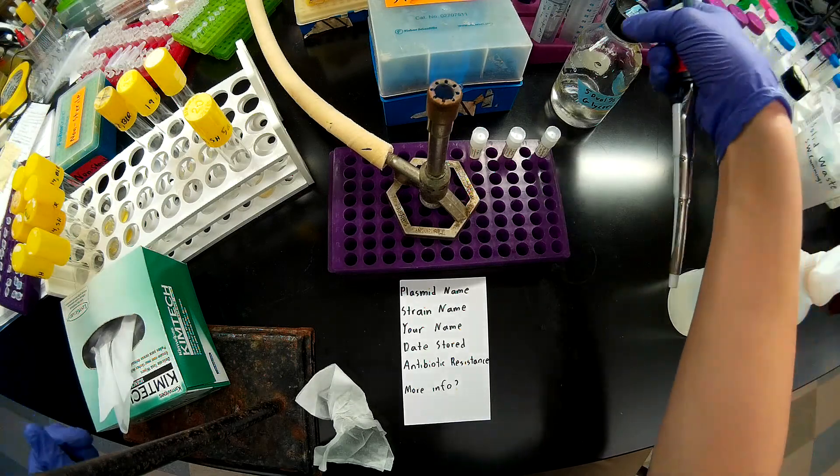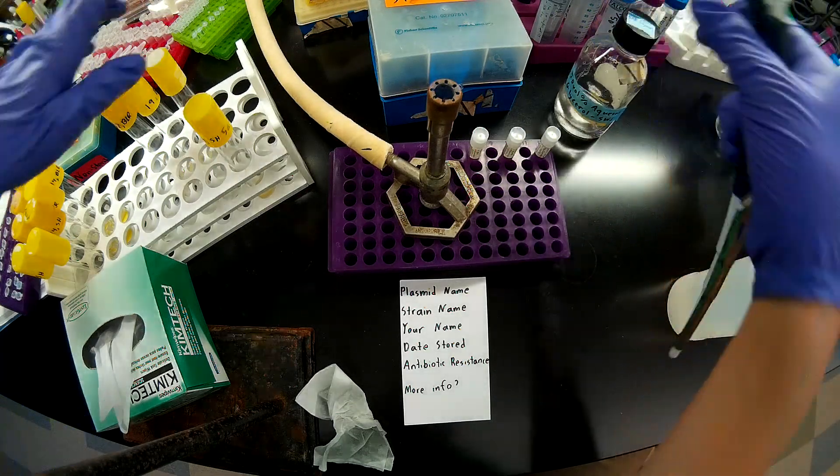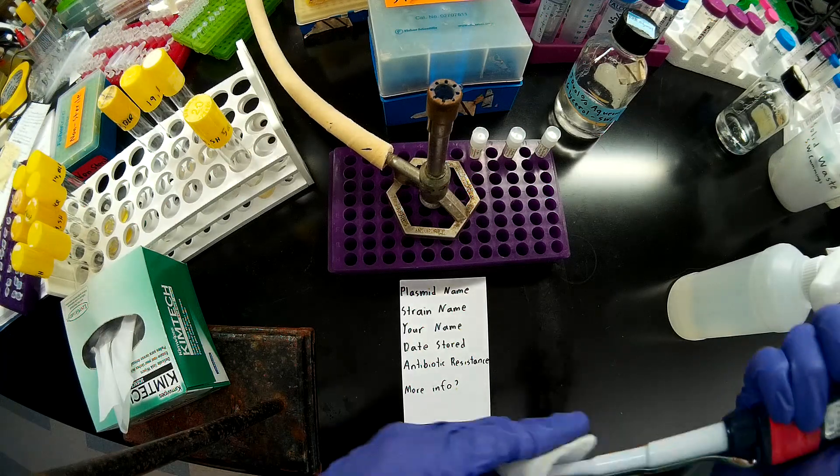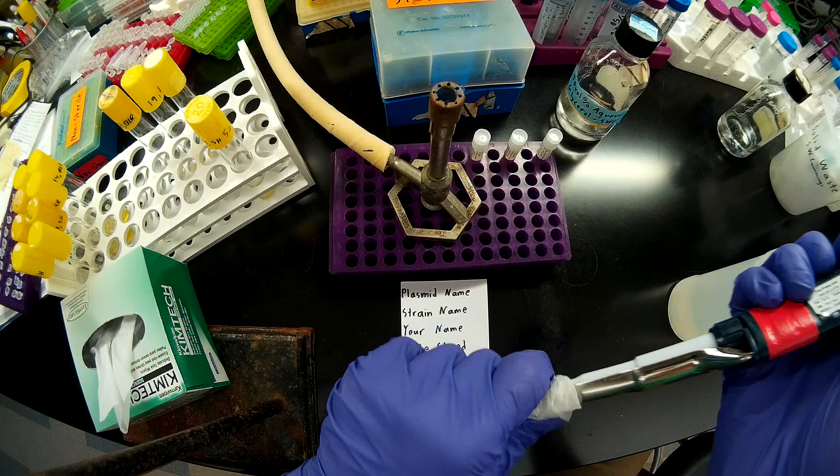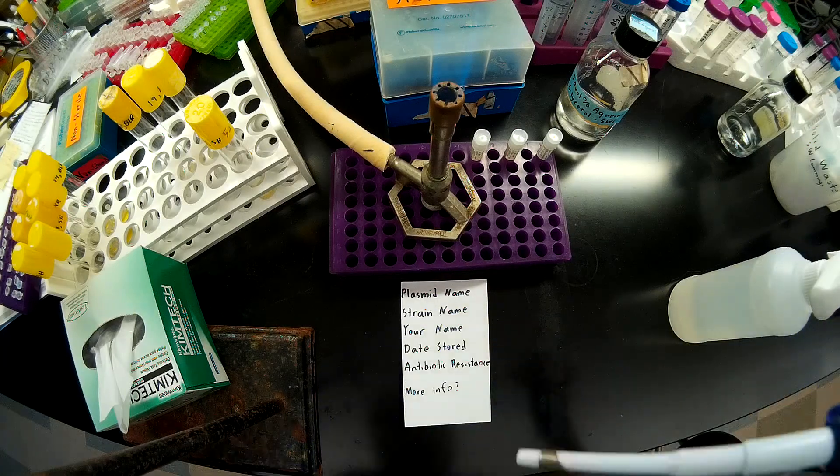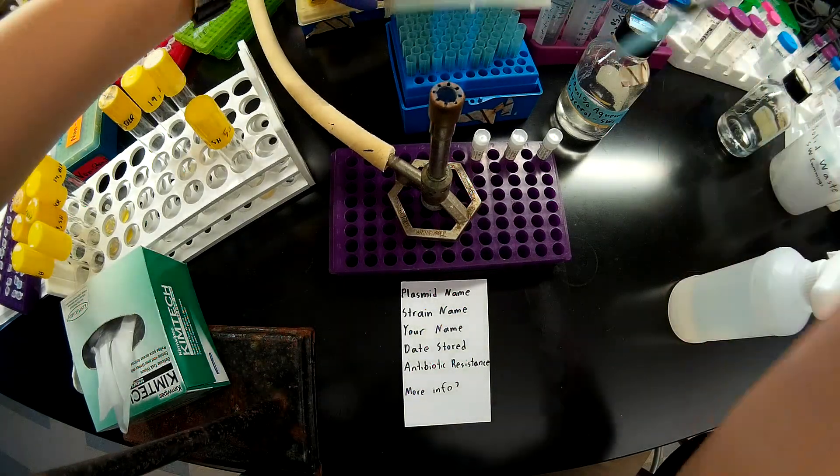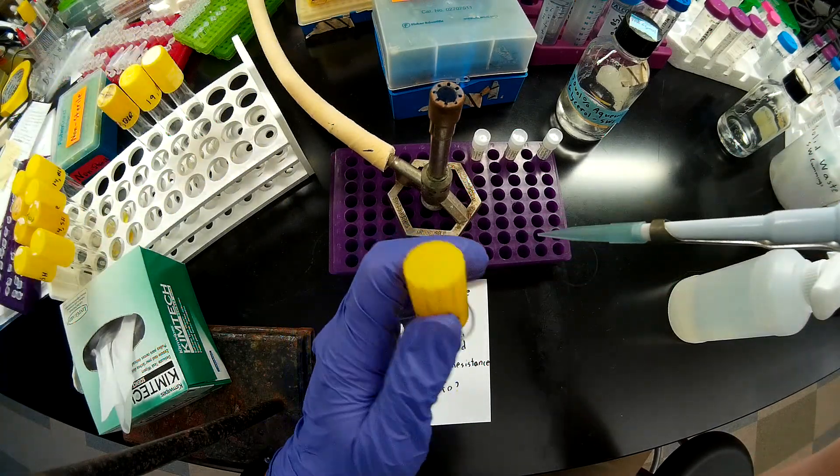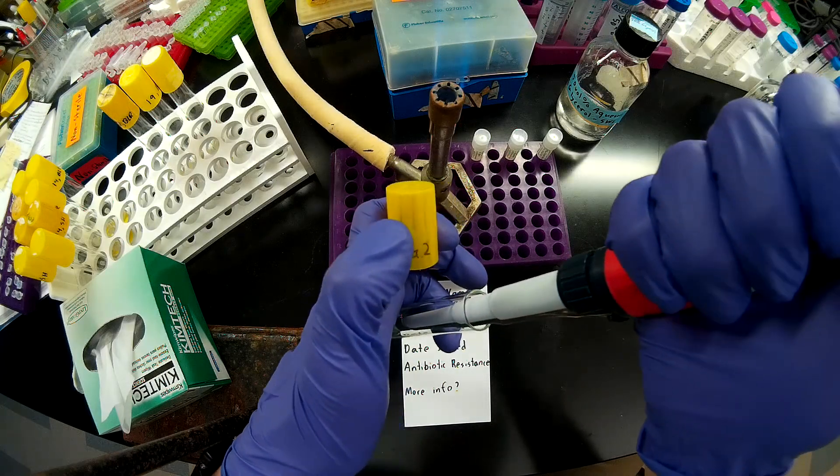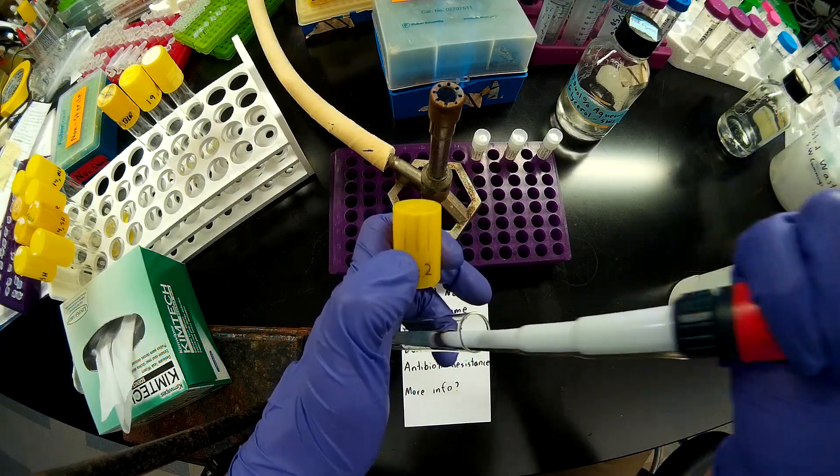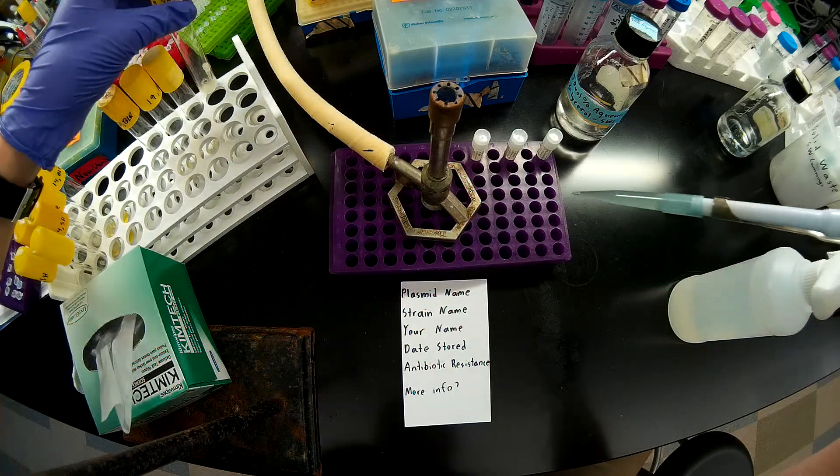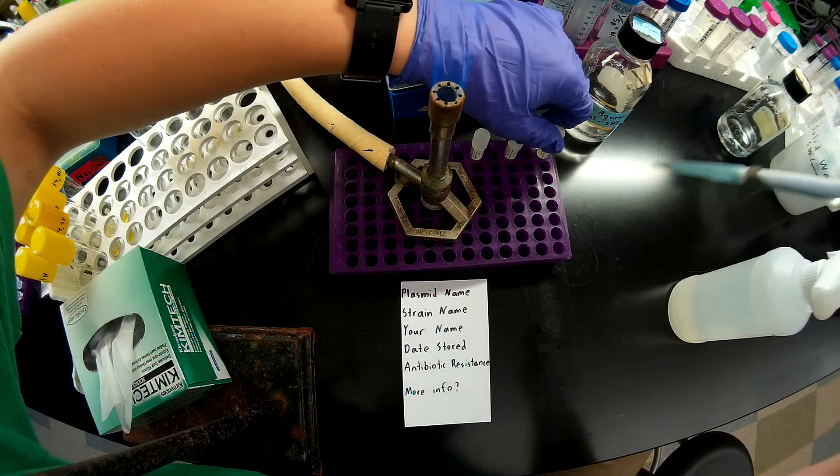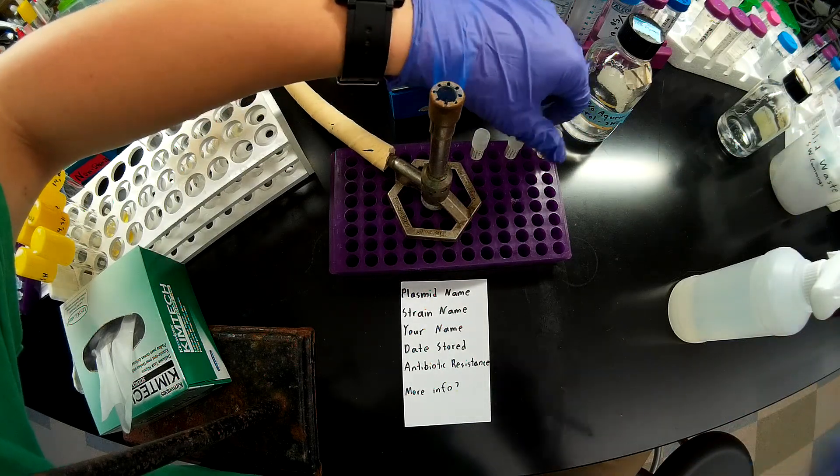So you'll note that I'm mixing the 50% glycerol, and this is just an LB culture here. I'm mixing them basically one-to-one. So again, cleaning off my barrel with 70% ethanol before sticking it down into the next tube, and that's because I really don't want to cross-contaminate these for storage. Be really careful.